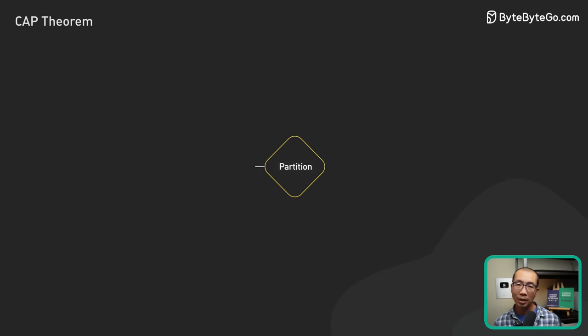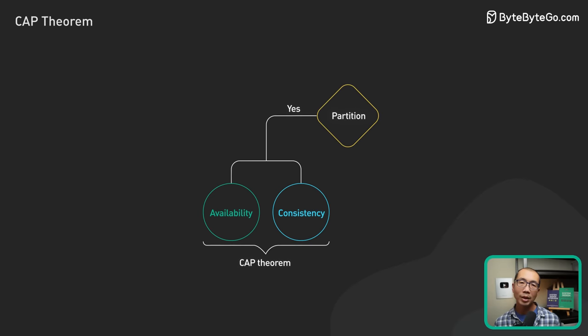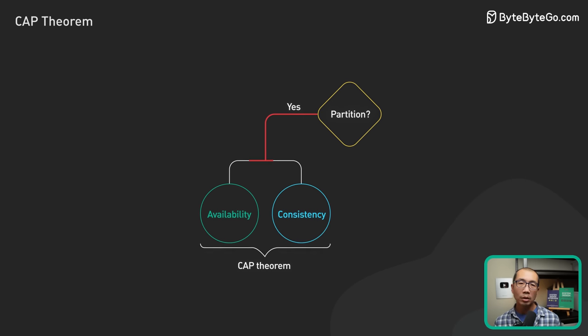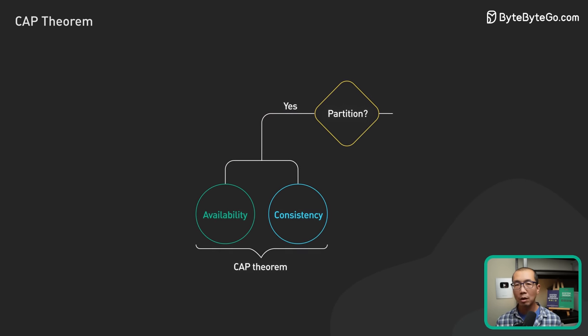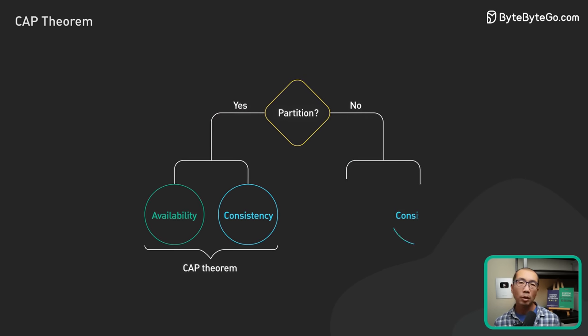This is a good starting point, but it does not provide a complete picture of the trade-offs to consider when designing a well-rounded distributed system. Specifically, when the system is operating normally without a network failure, which is most of the time.